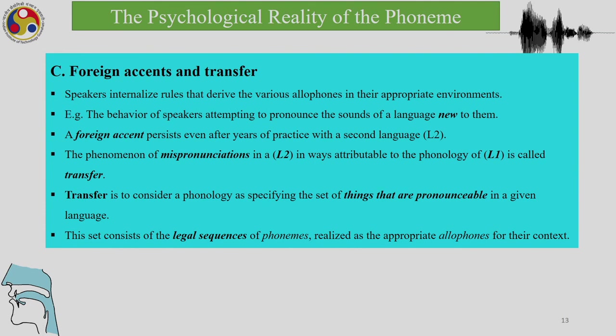Now talking about foreign accents and transfer: what happens when a speaker internalizes rules that derive the various allophones in their appropriate environments? A foreign accent persists even after years of practice. The phenomenon of mispronunciations attributable to the phonology is called transfer. Transfer considers a phonology as specifying the set of things that are pronounceable in a given context — this set consists of legal sequences of phonemes realized as the appropriate allophones for the context.